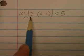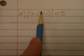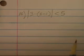This is problem number 16 off the handout. The absolute value of 3 minus the quantity of x minus 1 is less than 5.